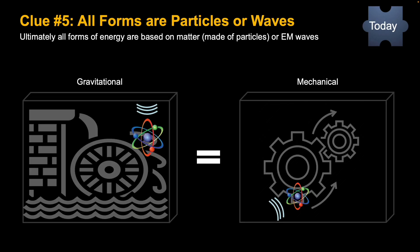For the last clue, let's remember that all forms are either particles or waves and illustrate this. We'll go through a few examples of the different forms of energy. Because all matter is made of atoms and particles, we can illustrate an example of gravity affecting a waterwheel, which turns a turbine and makes useful mechanical energy.